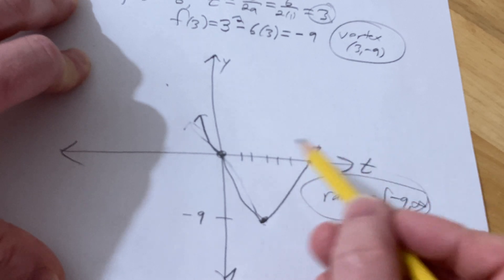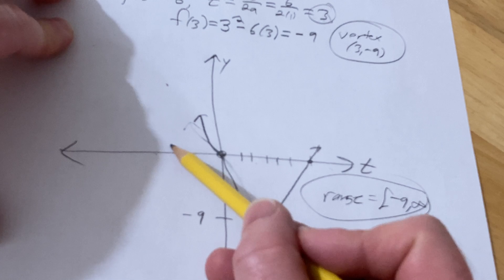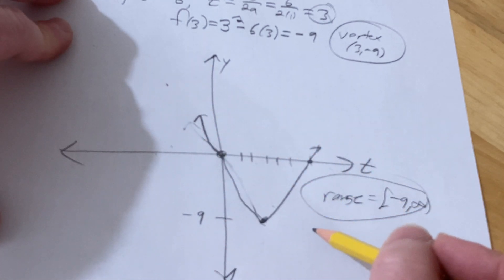The domain is all the t-values that lead to y-values. I can pick any t-value and I'm going to get a y-value, even over here, because this goes up forever. So the domain is going to be all real numbers, so negative infinity to infinity.